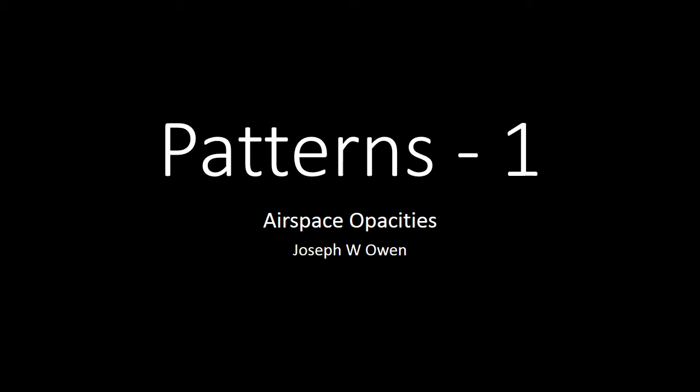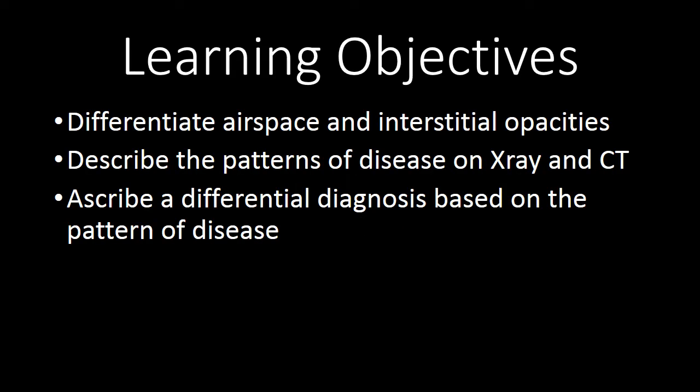In this screencast, we will start to get to the heart of radiographic interpretation and define the different patterns that we see. This is part one of a two-part series, and here we will focus on airspace opacities. At the end of this screencast, you should be able to differentiate airspace and interstitial opacities and start to describe the patterns of disease we see on x-ray and CT.